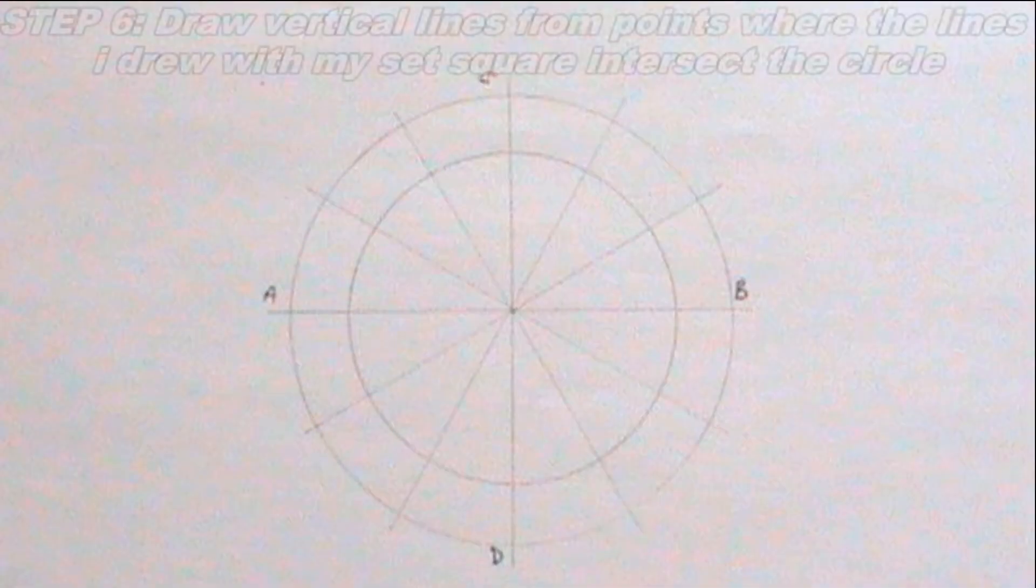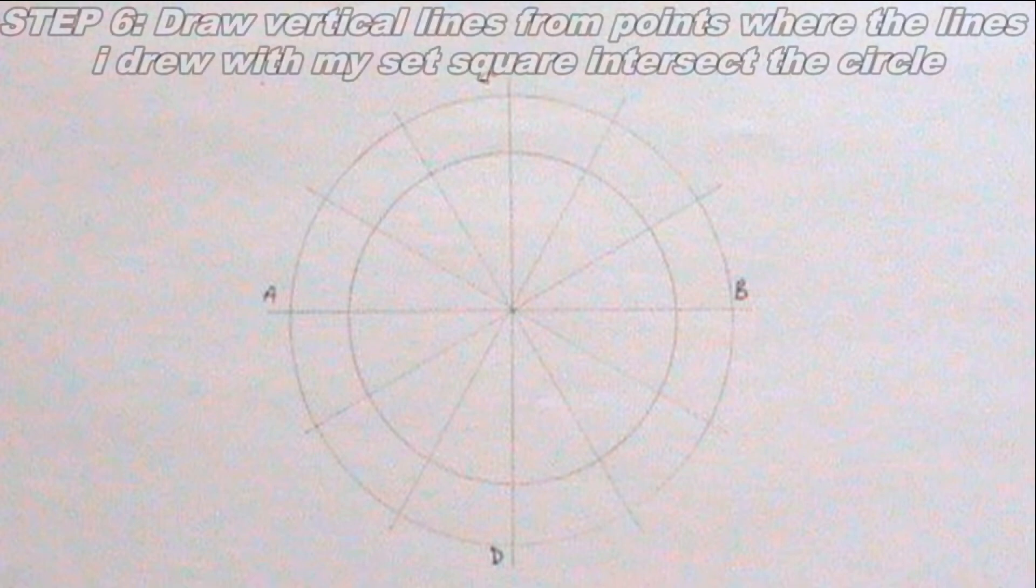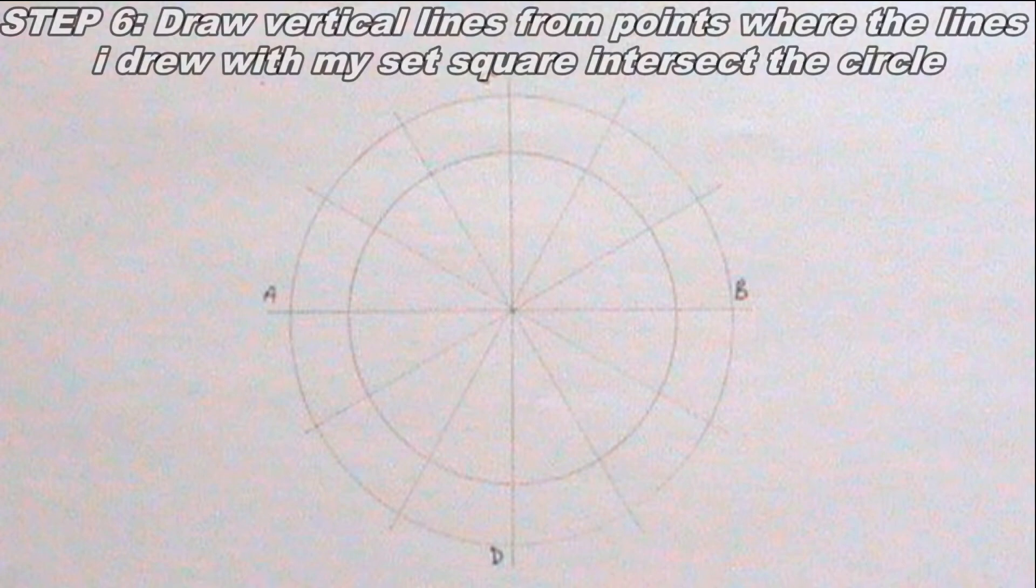Having done that, the next step I will take is to draw vertical lines from points where the lines I drew with my set squares intersect the circle. These lines should be thin continuous dashes.